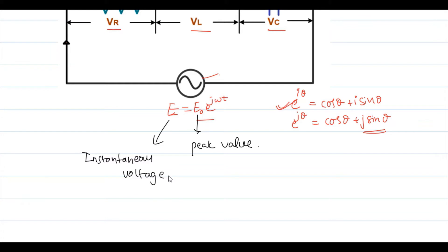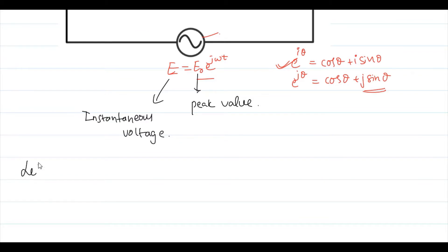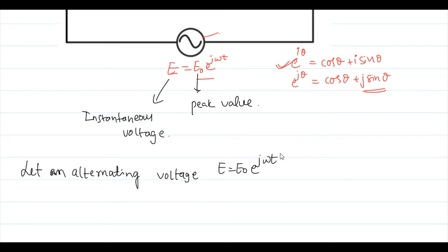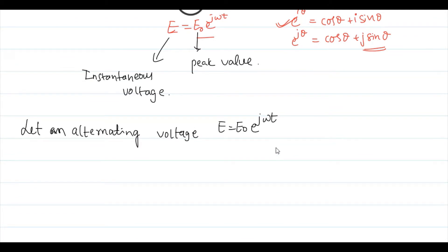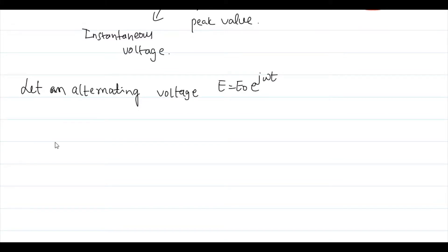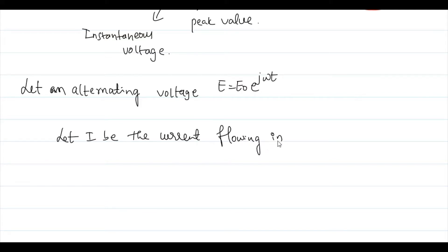Let an alternating voltage E = E₀ e^(jωt) be applied to the circuit containing R, L, and C all in series as shown in the figure. Let I be the current flowing in the circuit at any instant of time t.